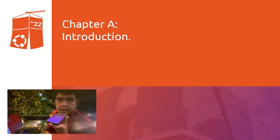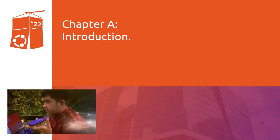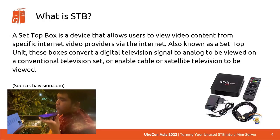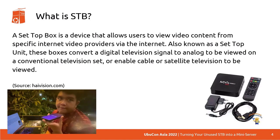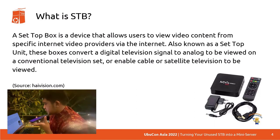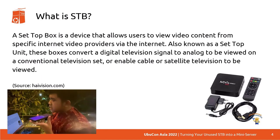Let's go to the first chapter. Before we start executing the materials or experiencing new stuff, we need to introduce ourselves to the device we are going to modify. So this is the introduction: what is an STB? A set-top box is a device that allows users to view video content from specific internet video providers via the internet. Also known as a set-top unit, these boxes convert a digital television signal to analog to be viewed on a conventional television set, or enable cable or satellite television to be viewed. That's according to heyvision.com.